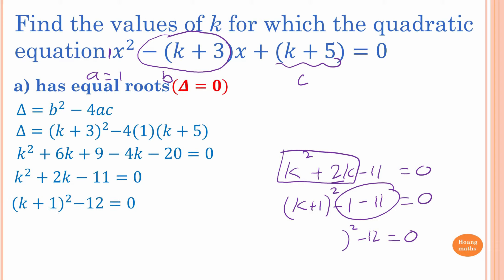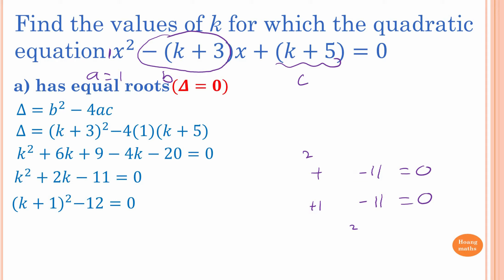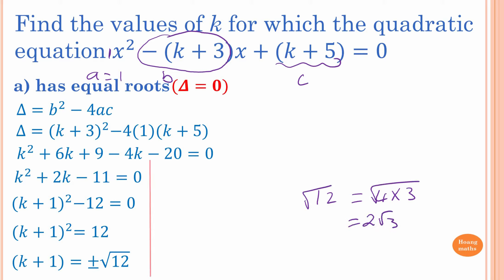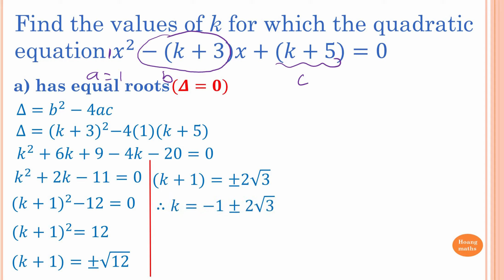Moving 12 to the other side: (k+1)² = 12. Square rooting both sides: k+1 = ±√12. Since 12 = 4×3, √12 = 2√3. Therefore k = minus 1 minus 2√3 or k = minus 1 plus 2√3.